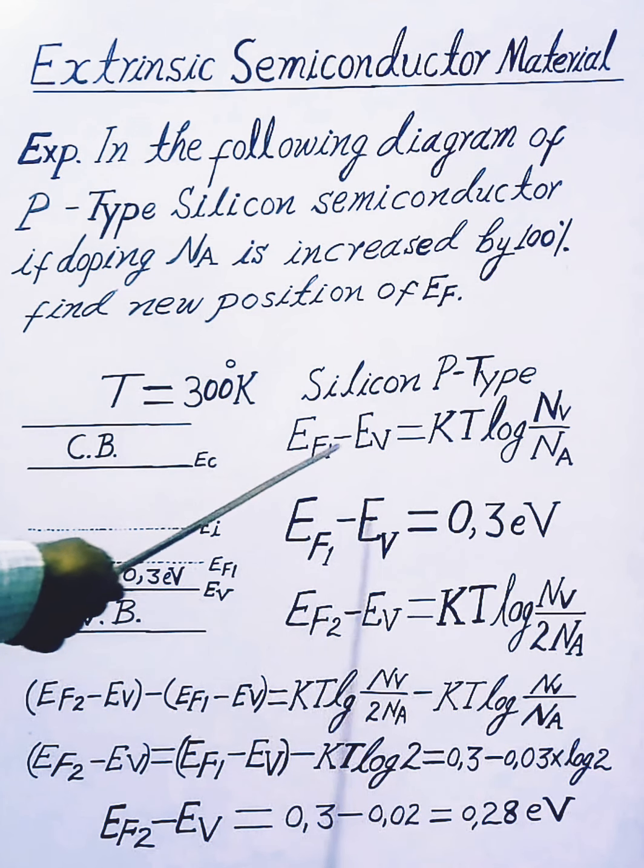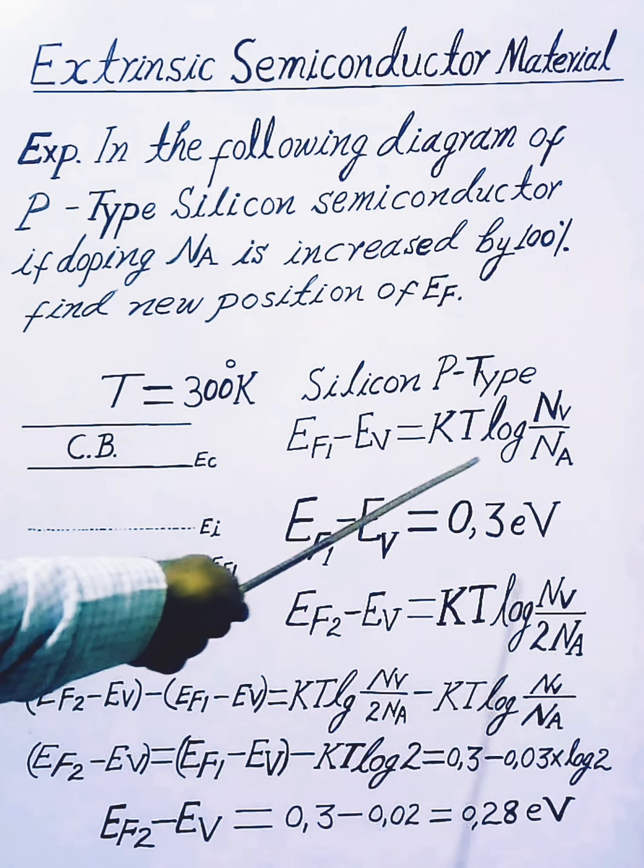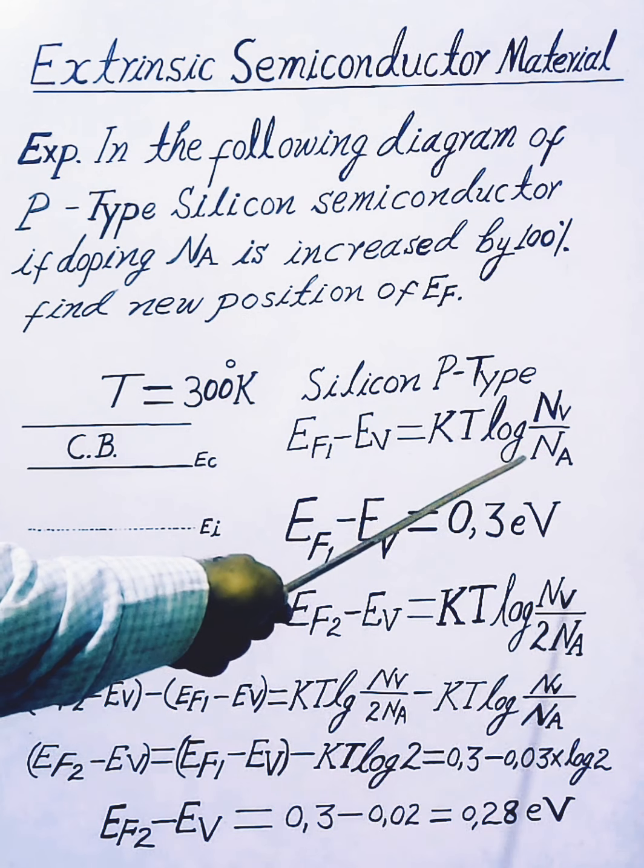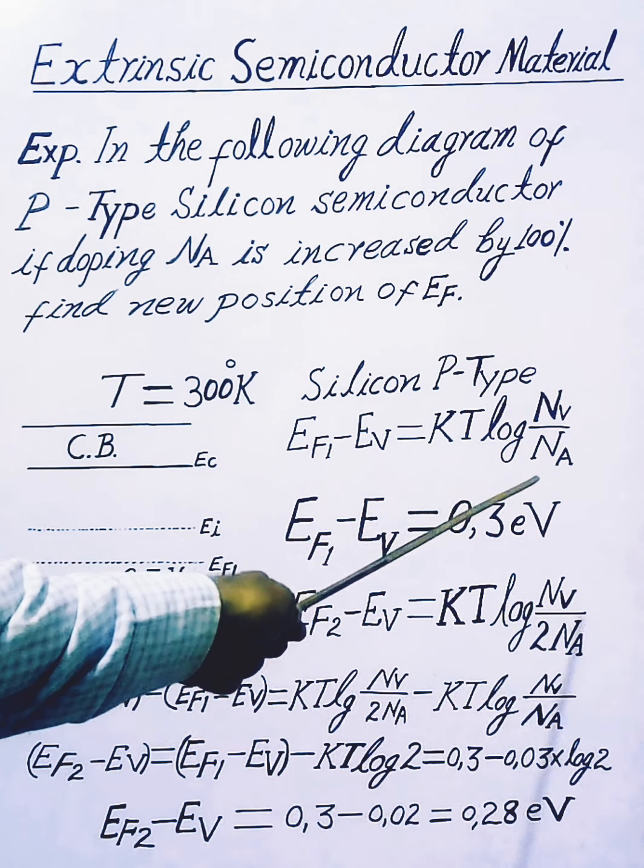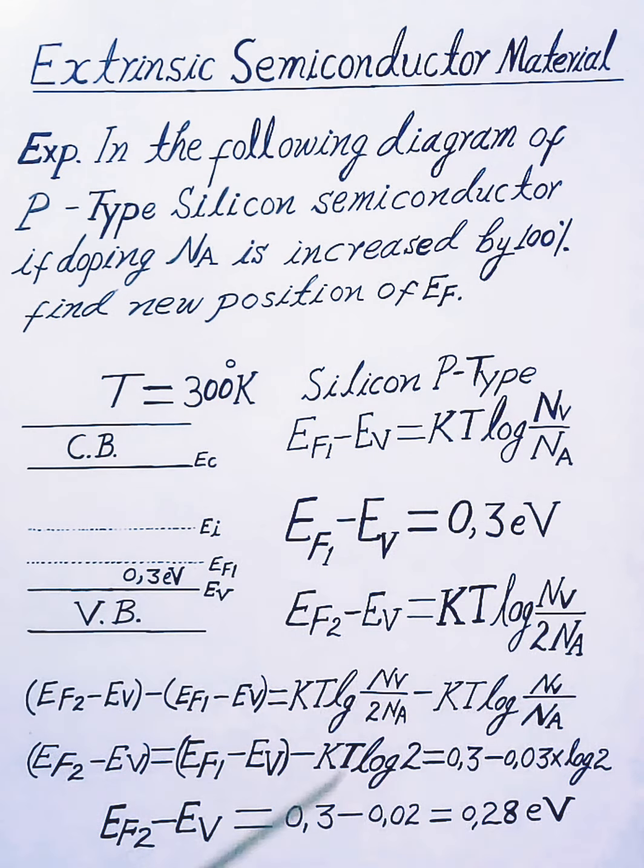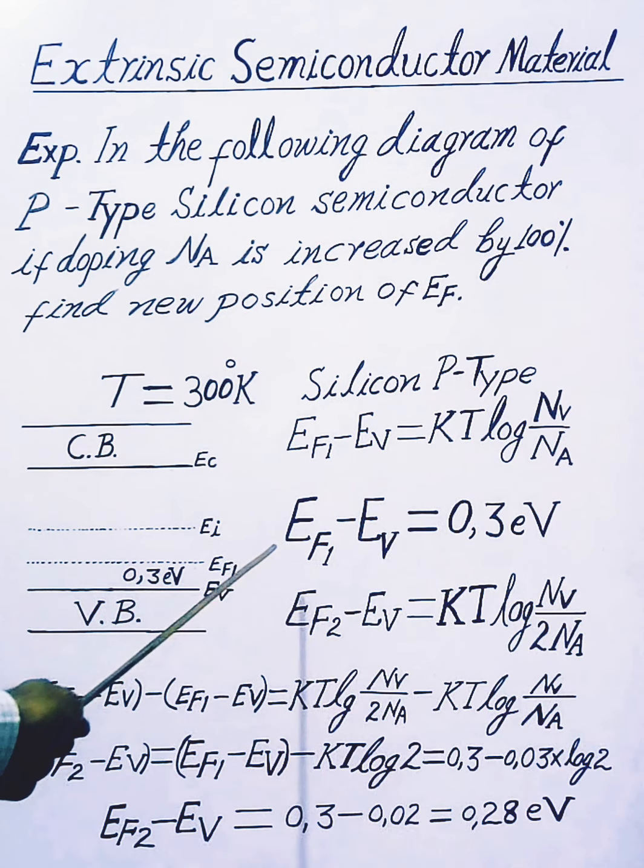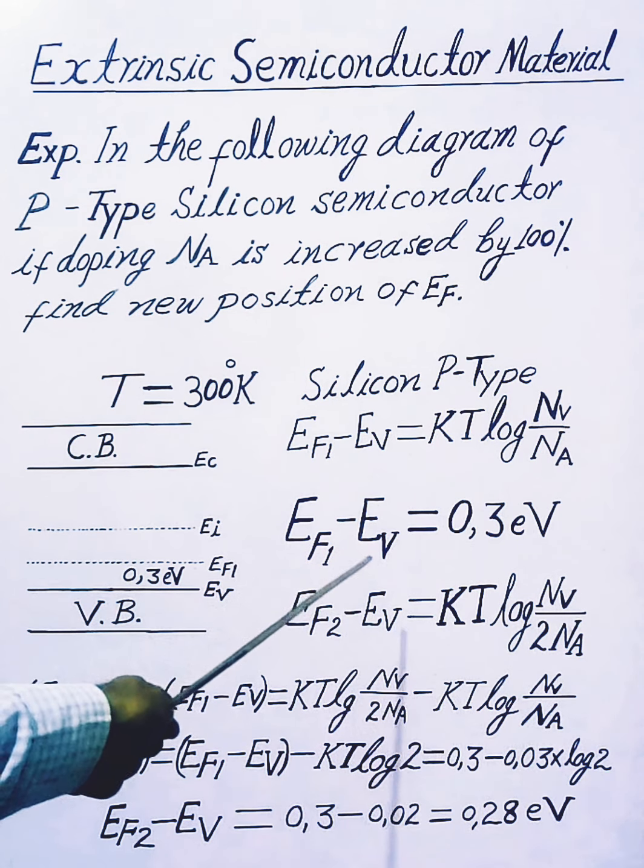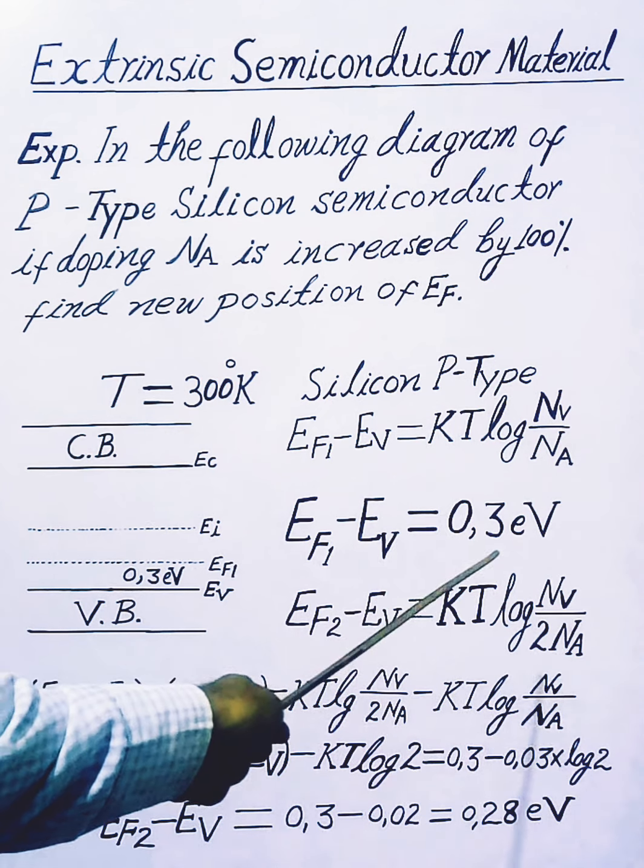Now, EF1 minus EV equals KT log Nv divided by Na, and EF1 minus EV equals 0.3 electron volts.